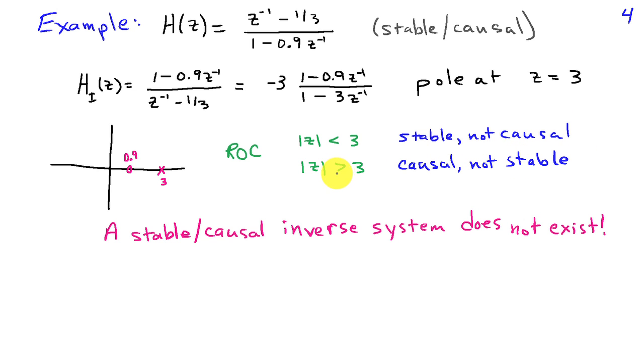On the other hand, if I chose magnitude of z greater than 3, I would get a system which is causal, because then this pole would be expanded in terms of the right-sided inverse z transform. But it wouldn't be stable, because we no longer have magnitude of z equals 1 in the region of convergence. So in this particular case, we can't find an inverse system that is both stable and causal. We could find a stable inverse system that's not causal, or a causal inverse system that's not stable, but can't find both.